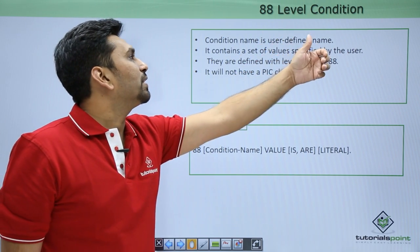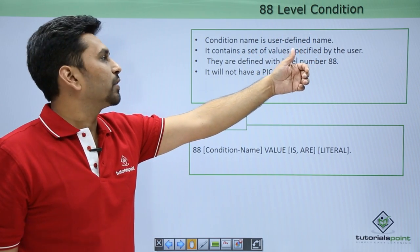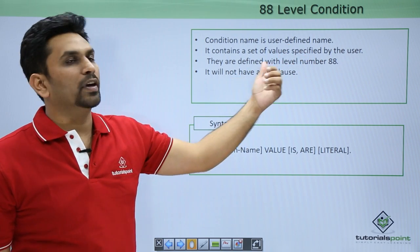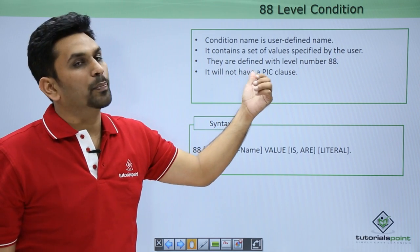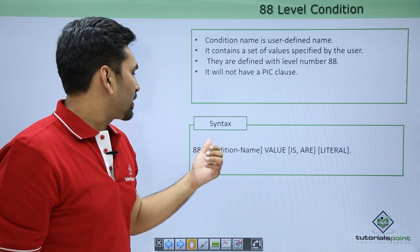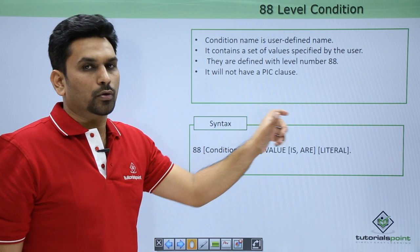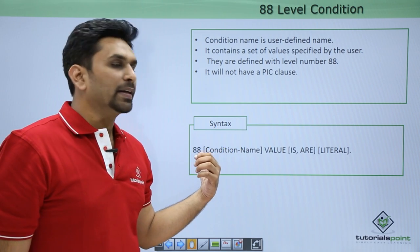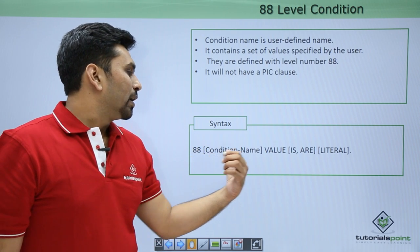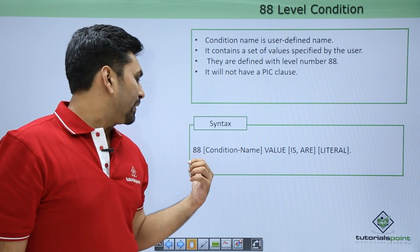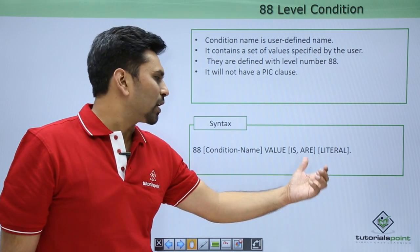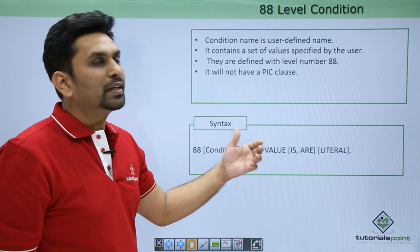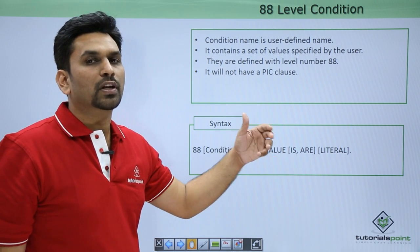88-level condition uses a user-defined condition name containing a set of values specified by the user. They are defined with level number 88 and will not have a PIC clause. For example, at the 01 level you define a group like student marks, then at the 88 level you write '88 PASS VALUE 41 TO 100' and '88 FAIL VALUE 0 TO 40'. These can be used in the evaluate verb.